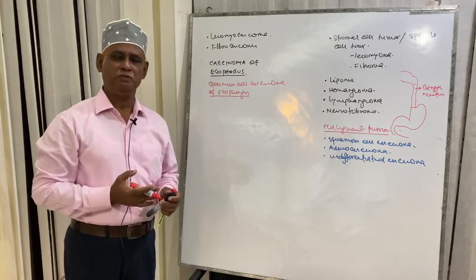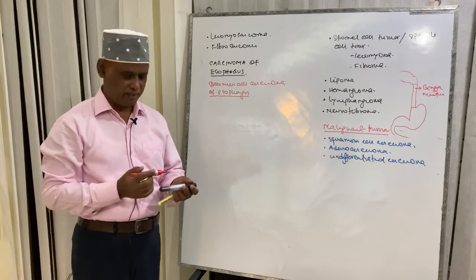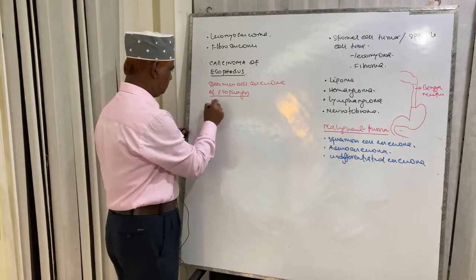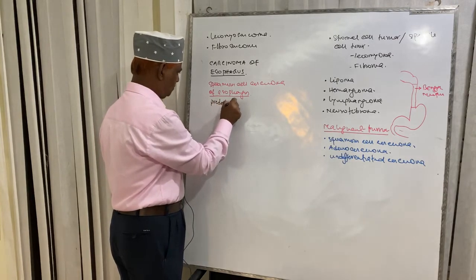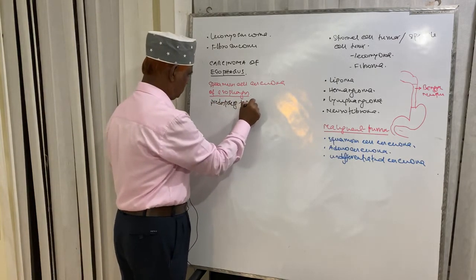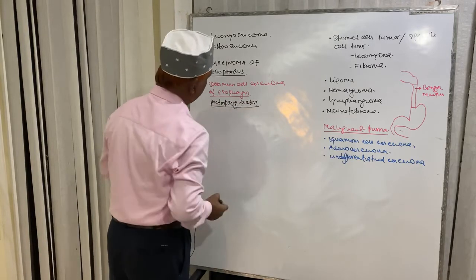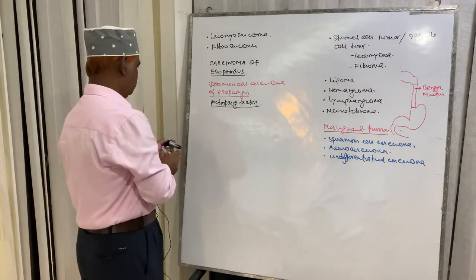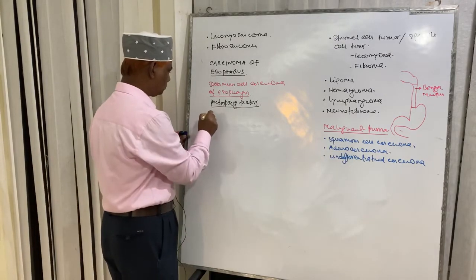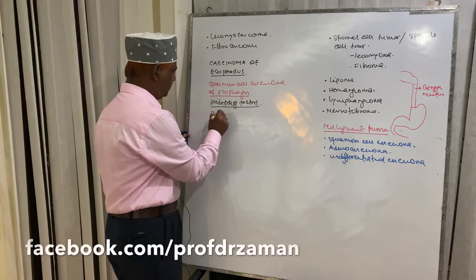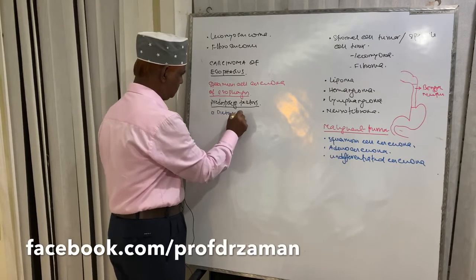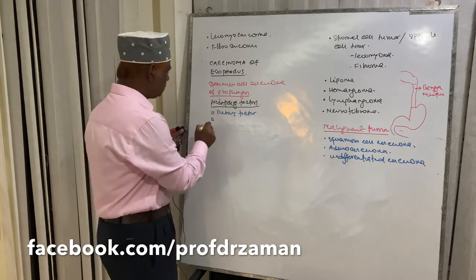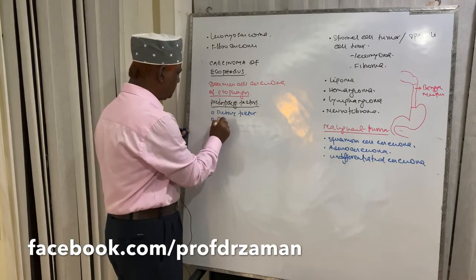What are the predisposing factors of squamous cell carcinoma of esophagus? The predisposing factors of esophageal squamous carcinoma include dietary factors, pre-existing disease of esophagus, lifestyle, and genetic predispositions.